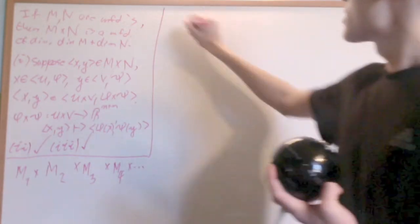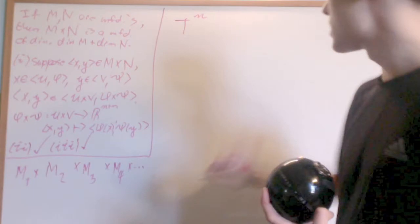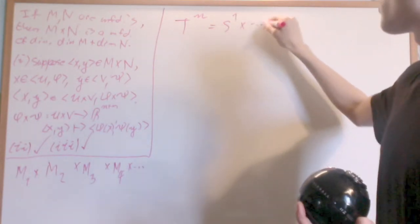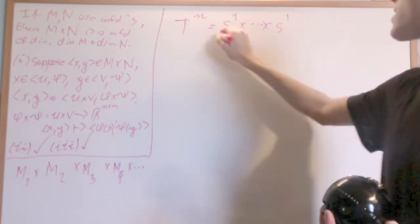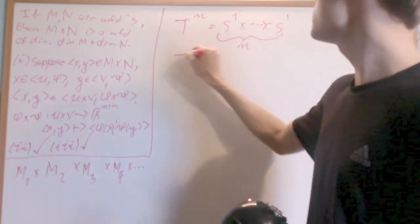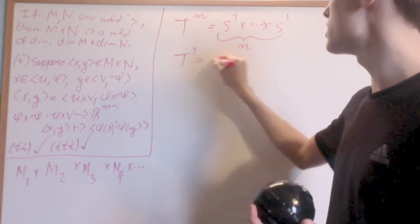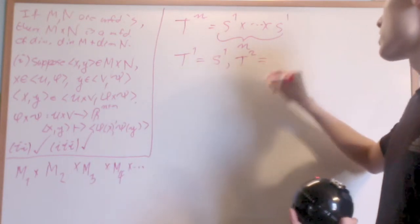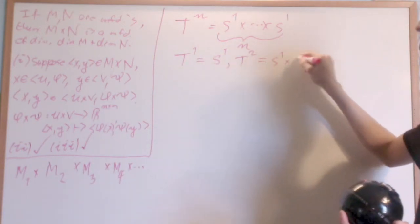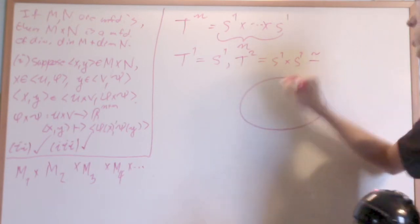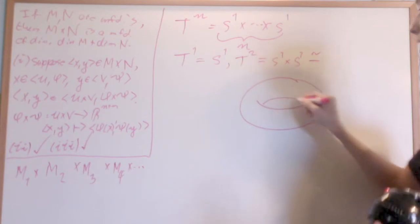A nice easy example is the N-torus TN, which is just the circle multiplied with itself N times. For example, T1, the one-dimensional torus, is just the circle. T2 is S1 crossed with itself, and it's actually homeomorphic to a donut.